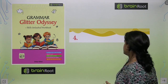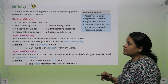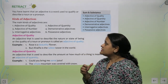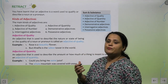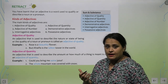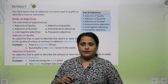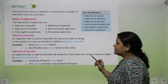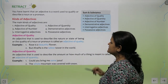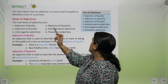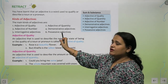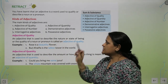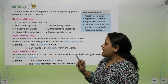The chapter is Chapter 4: Adjectives. You have learnt that an adjective is a word used to qualify — kisi chiz ki quality bataane ke liye — or describe a noun or a pronoun. In this chapter we are going to learn adjective of quality, adjective of quantity, adjective of number, demonstrative adjectives, interrogative adjectives, and possessive adjectives — these all are the kinds of adjectives.